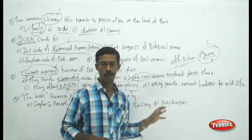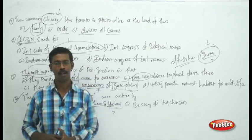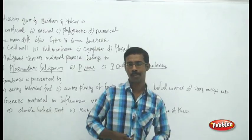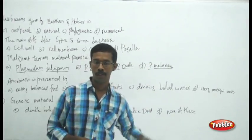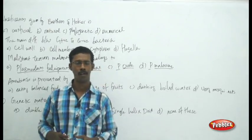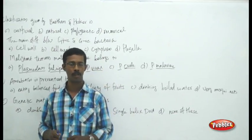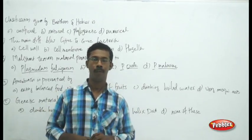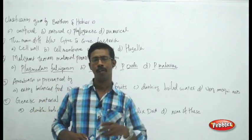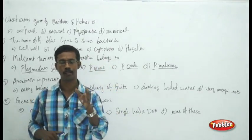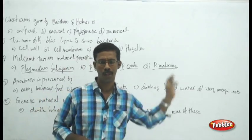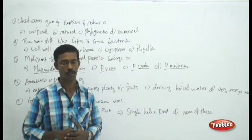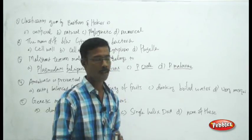Now we continue with questions from Biological Classification. This covers all five kingdom classifications, the kingdoms and their characters, classes, families, orders, and phyla. All the questions we will see belong to biological classification as a single unit.